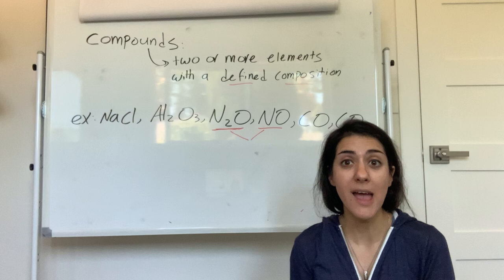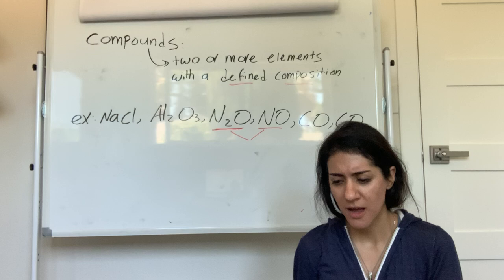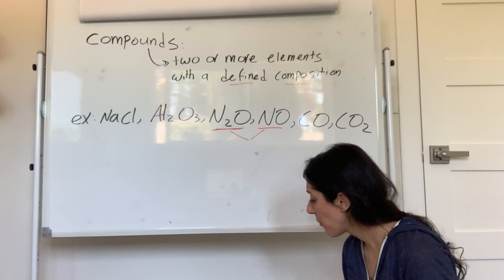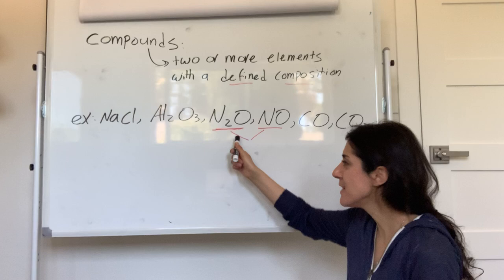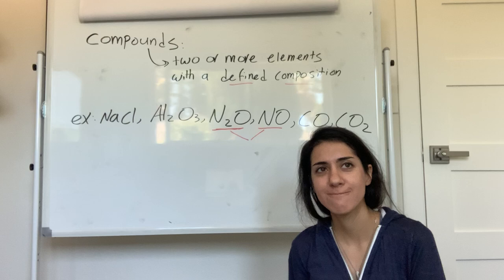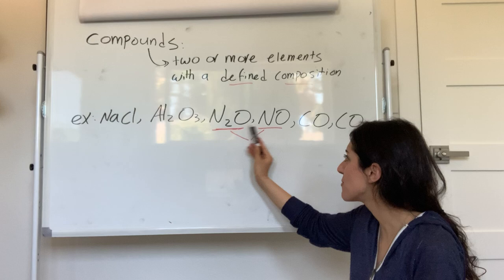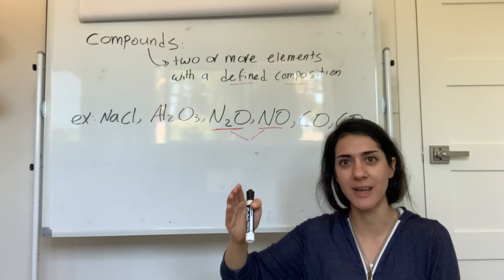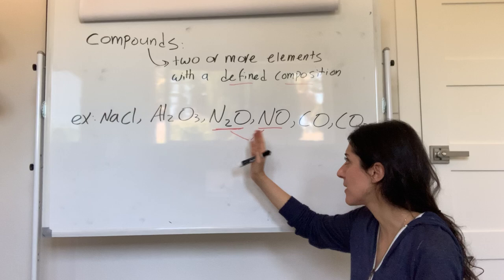You might guess they probably have similar properties — same elements, almost the same ratio, just one extra nitrogen. Well, check this out: N2O is laughing gas — it's going to make you laugh. NO is going to kill you. That's why defined composition really matters. It's not just that they both have nitrogen and oxygen; that one extra nitrogen puts you in a completely different compound. One makes you laugh, one kills you.